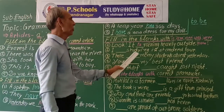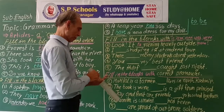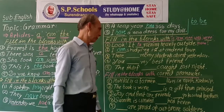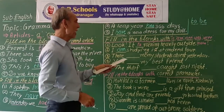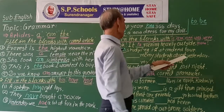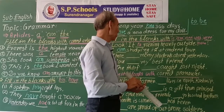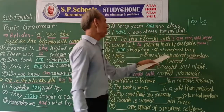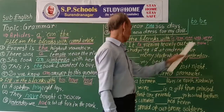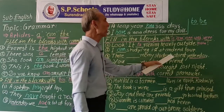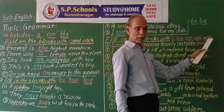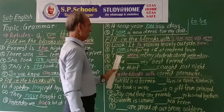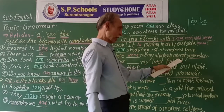I am studying in standard four. There were many students absent yesterday. 'Yesterday' is the hint that there should be a past form, so with 'many students' we use 'were', not 'was'. There were many students absent yesterday.